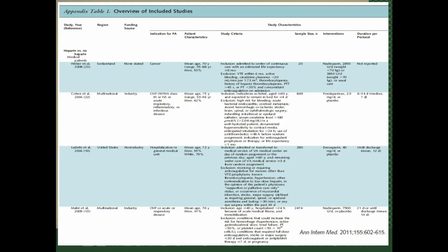Here's an example of one of those tables from that systematic review published in the Annals. You can see under the diseases that patients have — the first study has patients who all have cancer, another has patients with heart failure and respiratory diseases. Look at the drugs used: two different anticoagulants. Is it fair to combine all these things? This is clear evidence of clinical heterogeneity. You have to decide: are we looking at only apples, or apples and oranges?